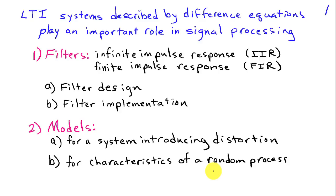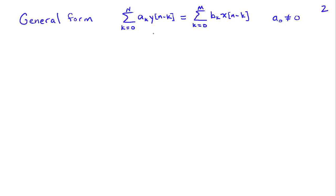So the general form for a difference equation is, as shown here, we've got the sum from k equals 0 to capital N of AK y of n minus k equals the sum of k equals 0 to M of BK x of n minus k. We normally assume that a0, the coefficient associated with y of n on the left-hand side, cannot be equal to 0.